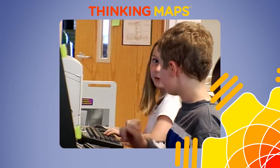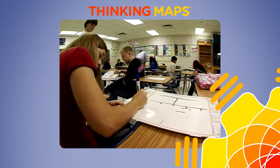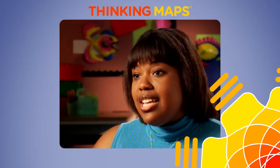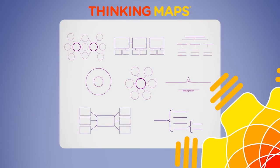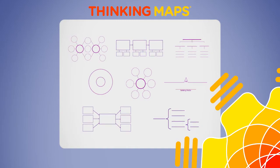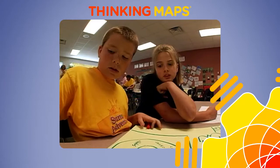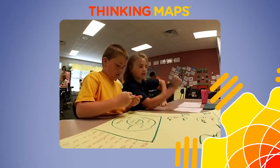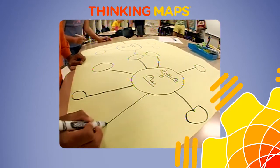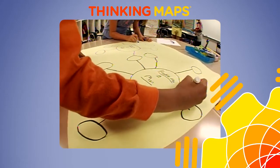I can use a thinking map to show the children what I'm thinking, and they'll understand because they understand the thinking map. They know that what I'm teaching them is a process or an analogy, because they know exactly what each thinking map is supposed to show. It helps the children because they are not guessing what I'm looking for. When I do a circle map they know I'm brainstorming, and if I'm doing a bubble map they know we're looking for adjectives.